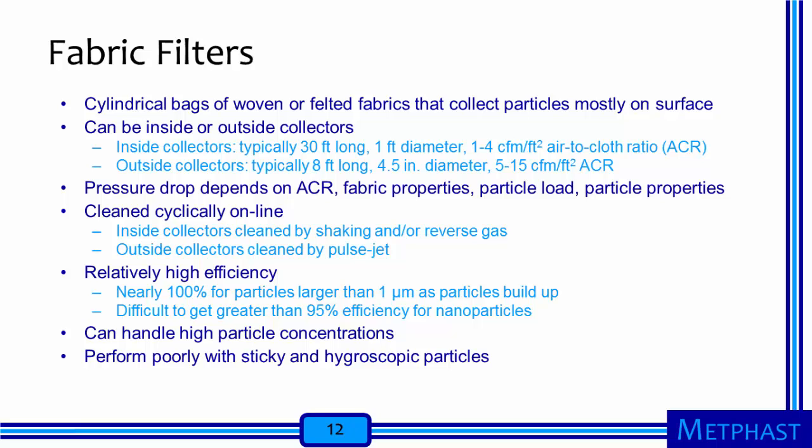Fabric filters have relatively high efficiency. They capture particles larger than 1 micrometer in diameter with nearly 100% efficiency once a semi-permanent dust layer builds up on the fabric. Initially the fabrics are less efficient, and particles are often released artificially upstream of new filters to build up the layer faster. It is difficult to achieve greater than 95% efficiency for nanoscale particles because some particles will get around or through the dust layer. Fabric filters perform poorly with sticky or hygroscopic particles because these are difficult to remove during cleaning cycles.